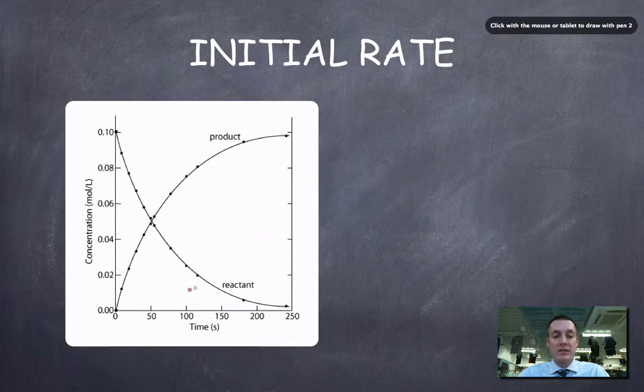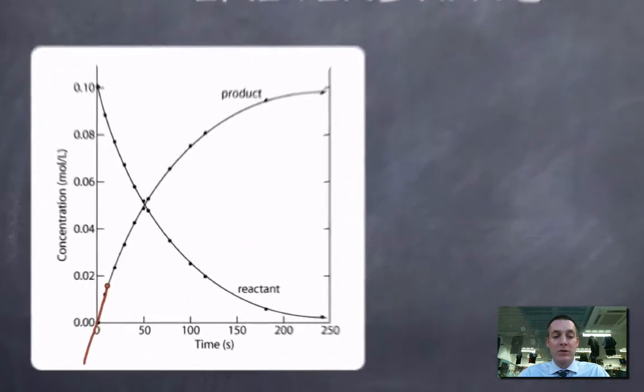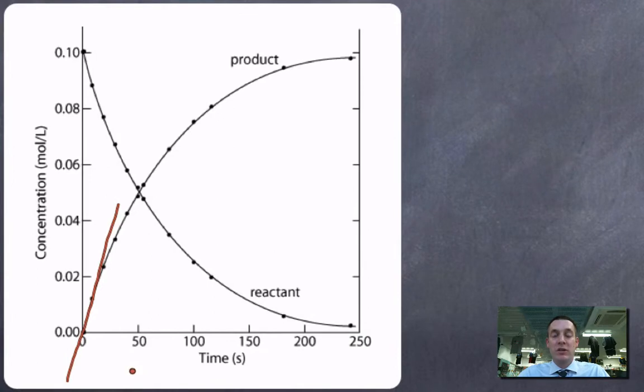So to find the initial rate, this is just like an instantaneous rate, really, except that we're doing it at time zero. Now, if you were to measure what the rate was after zero seconds, you could argue, well, there was no rate, because the reaction hasn't started yet, because time hasn't started going yet.